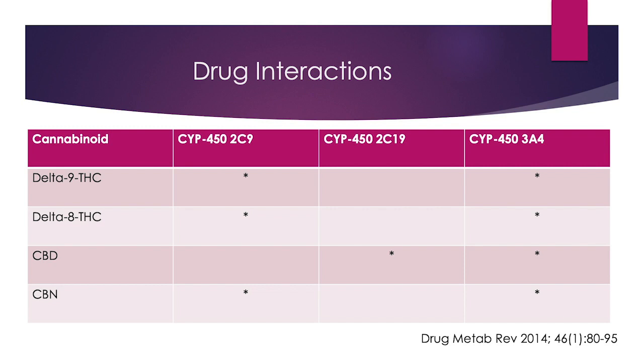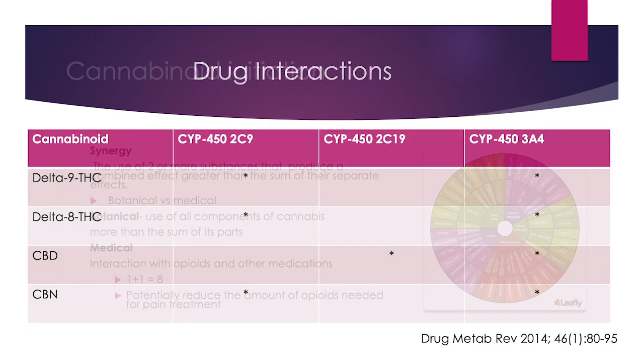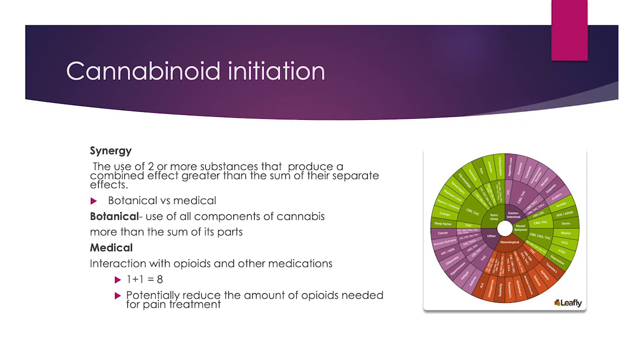The cytochrome P450 system illustrates how specific chemicals interact with drug metabolism. There is a synergism that can occur with medications — with opioids, for example, or with certain seizure medications like Keppra, it can actually potentiate their effect. So you no longer have 1 plus 1 equaling 2 — it equals 8. There is also a synergism we're learning about with different combinations of chemicals within the plant, such as CBD and THC together, or CBG.